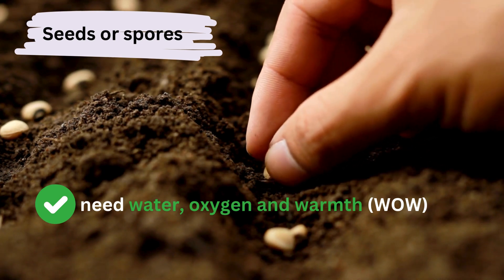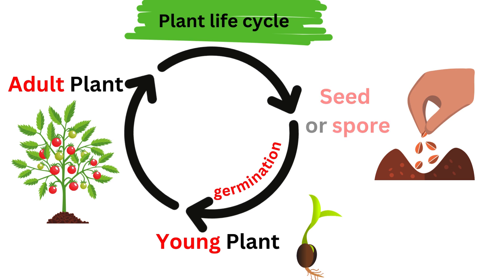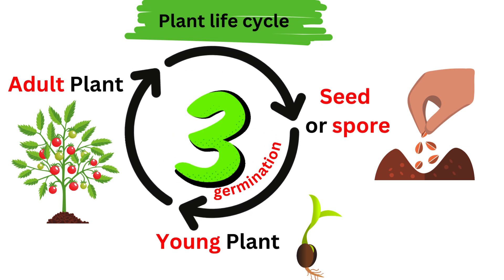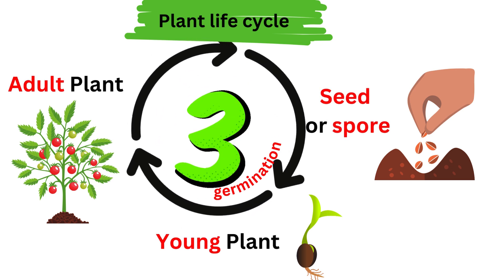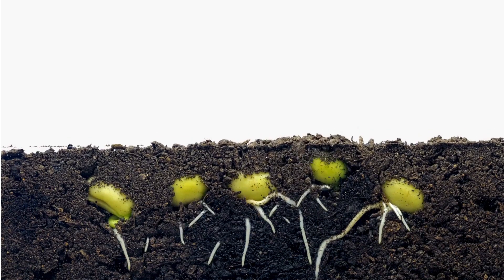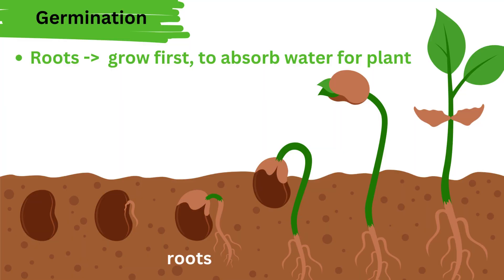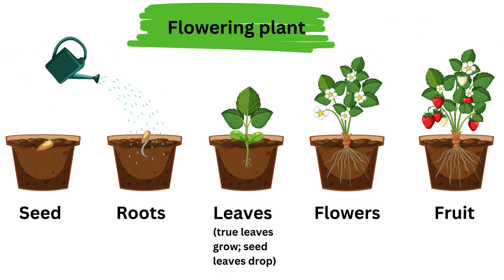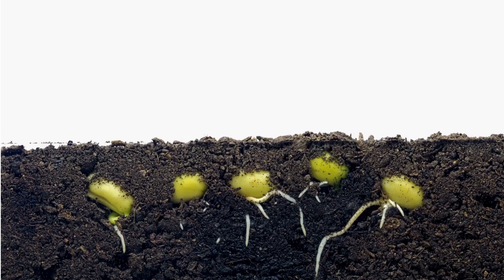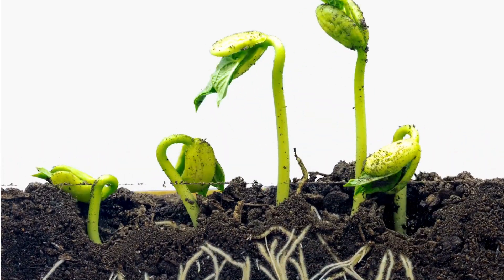Seed, young plants, adult plants — three stages in the plant life cycle. It's as easy as that. Roots, shoots, leaves, seed leaves drop. Plant matures, flowers and fruits grow, making seeds we can sow. And it all repeats again.